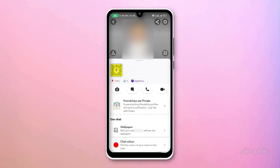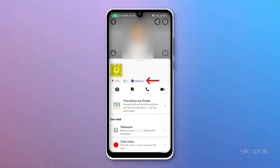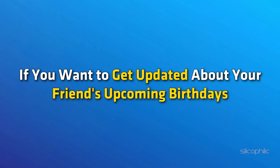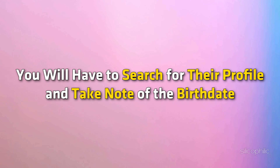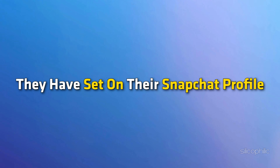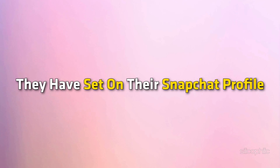You will also see their zodiac sign. If you want to get updated about your friend's upcoming birthdays, you will have to search for their profile and take note of the birthday date they have set on their Snapchat profile.